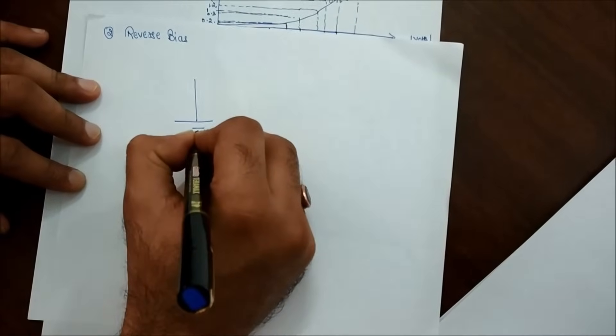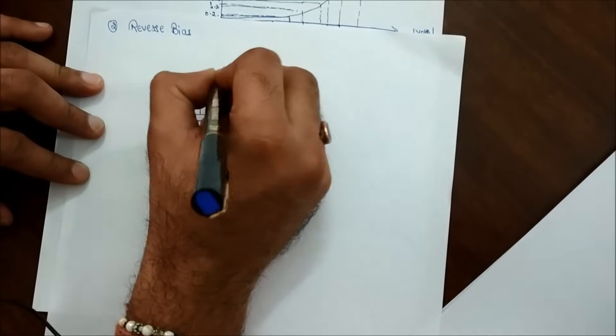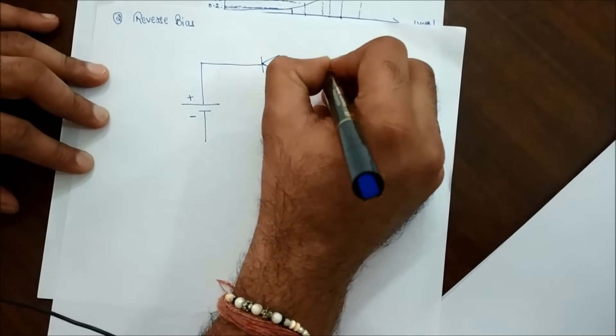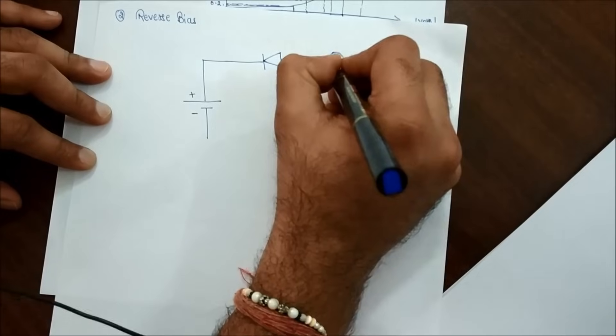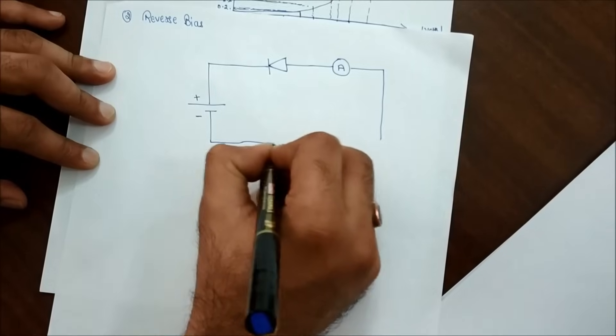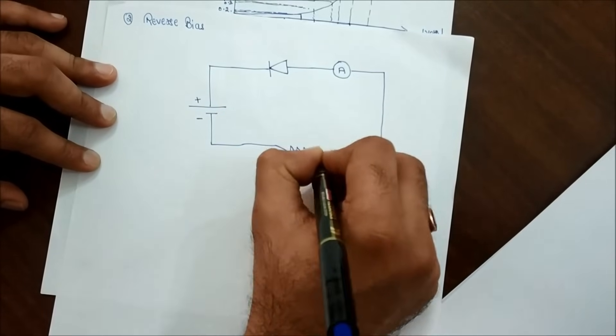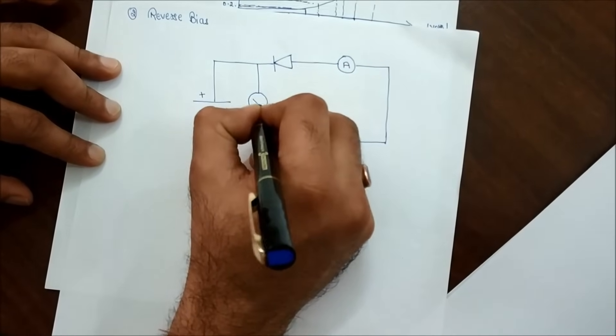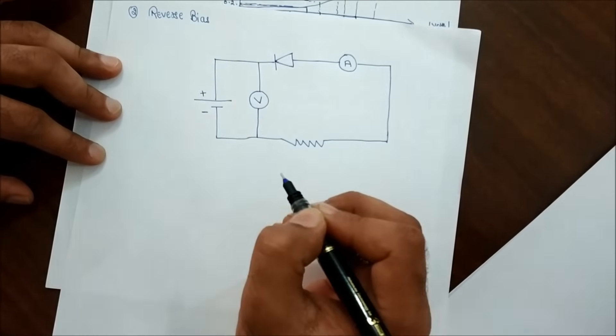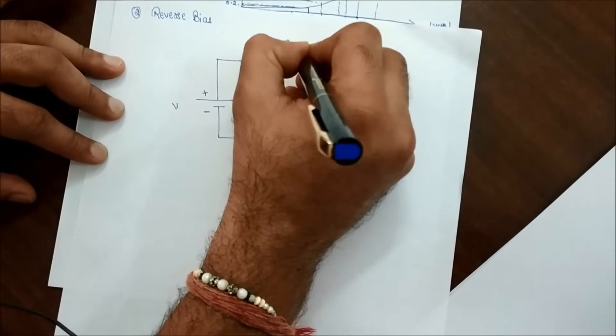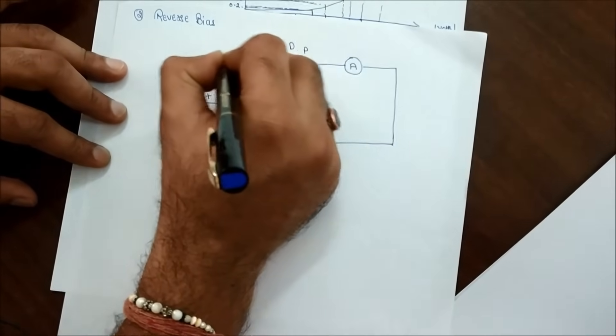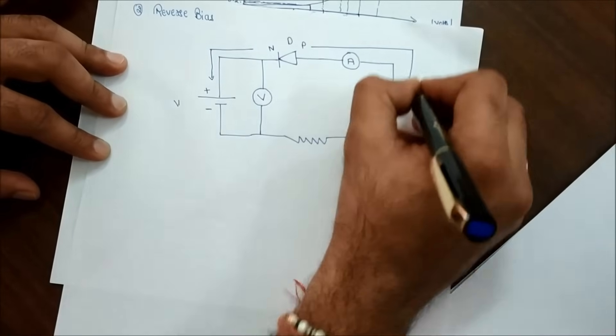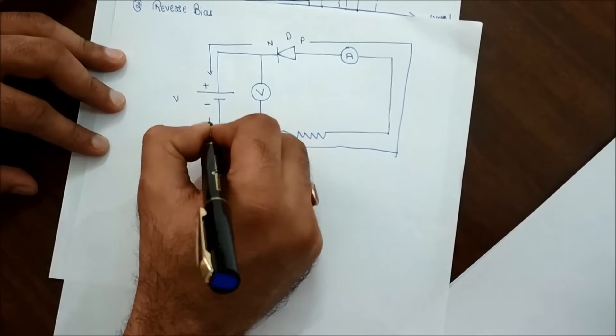Now we will do the reverse bias. We have the voltage source with positive and negative. As the name suggests, we will use an ammeter and the resistance to measure. This voltmeter is 30 volt. Now it is P and it is N. N is connected to positive side and this P is now connected to negative side.